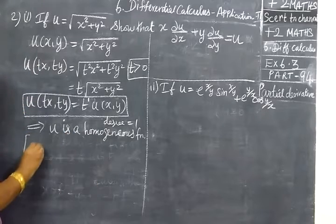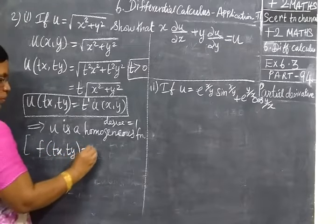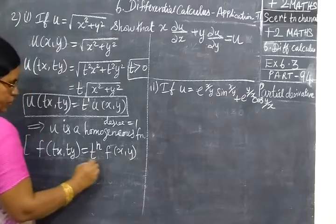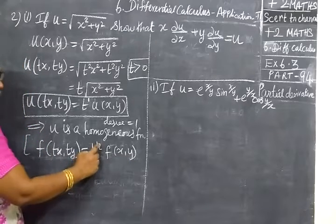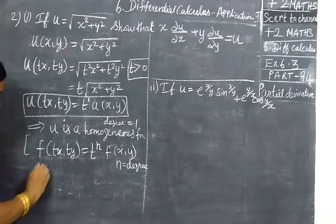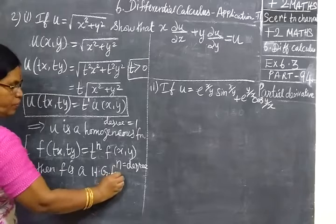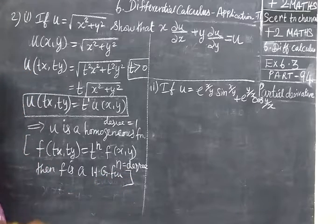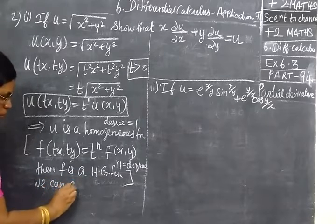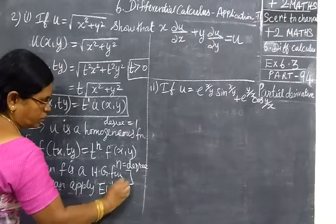That means I write the definition for this: f of tx, ty equal to t power n into f of x, y. f of x, y is the original function. t power n, where n is the degree. Then f is a homogeneous function — this is what we call it by definition. So if f is a homogeneous function, we can apply Euler's theorem.